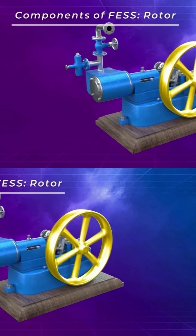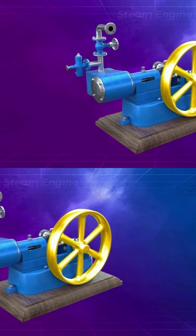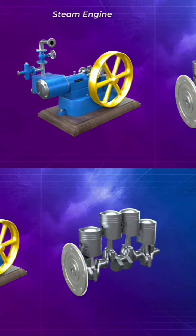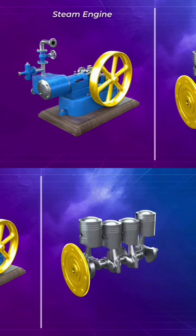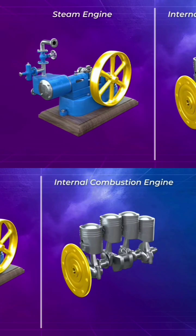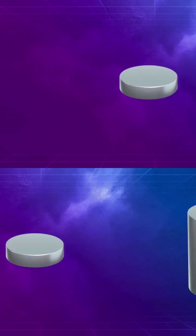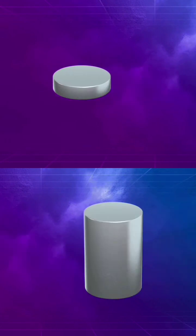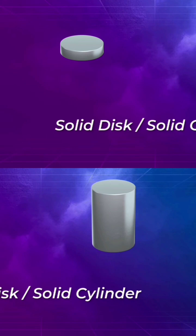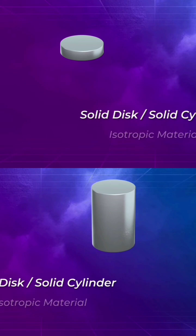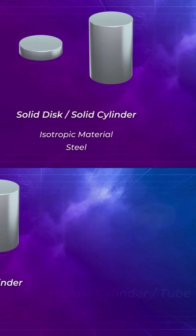Flywheels are mostly designed in two shapes. Solid discs or long cylinders are usually constructed from isotropic materials such as steel, while hollow cylinders or tubes are constructed from carbon and glass fiber reinforced composites.